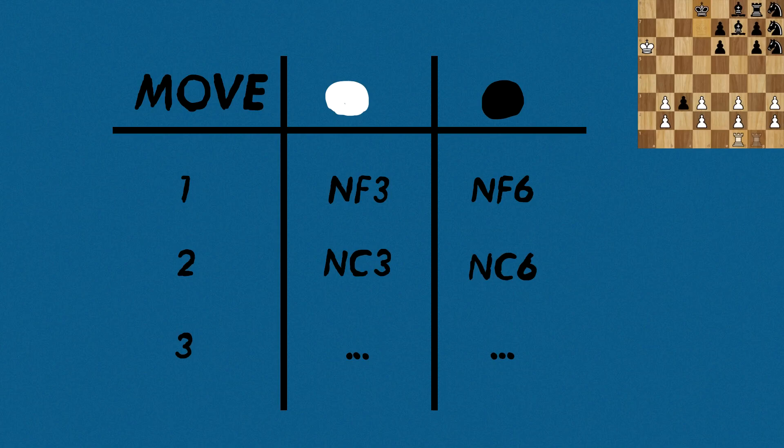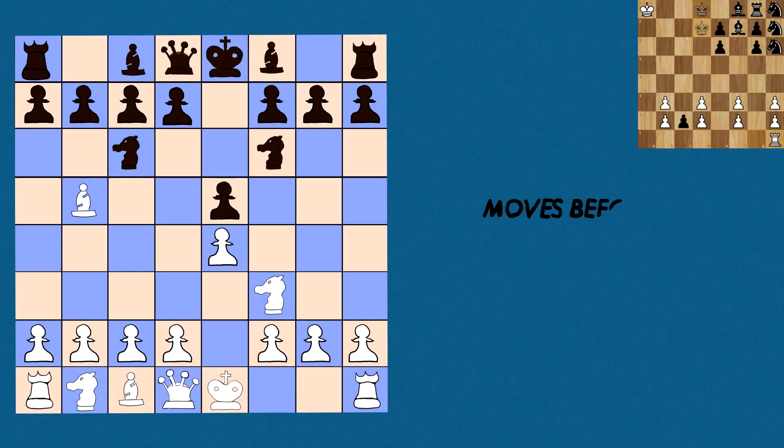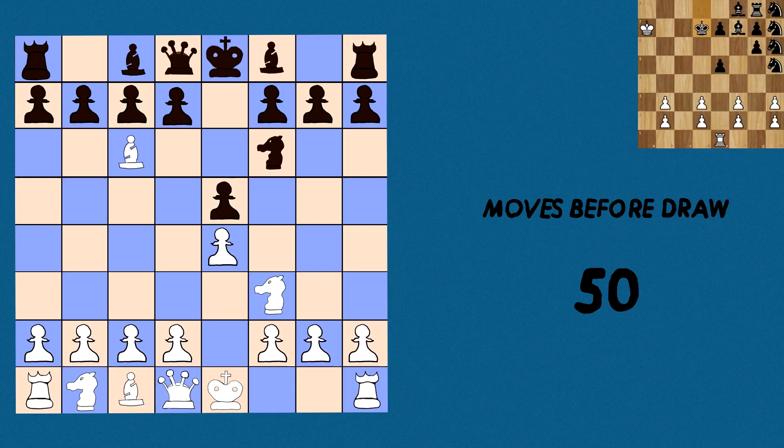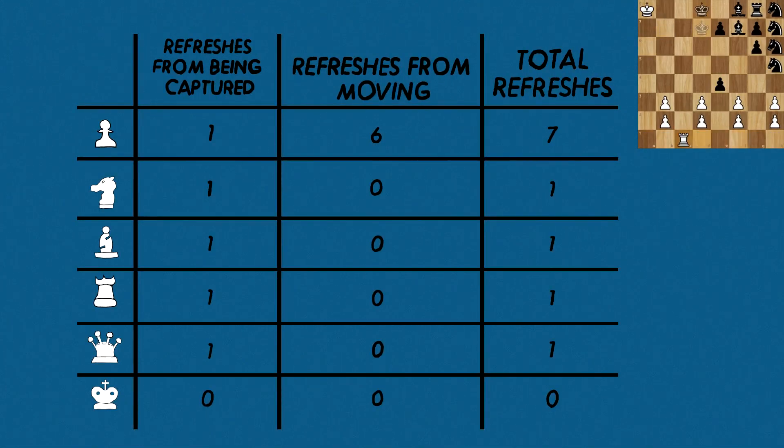Now, we must talk about the value of the pieces. Since we have the 50 move rule, we need to calculate the amount of resets we have. Resets meaning getting to the 50 move limit, and then making a capture or moving a pawn to reset the 50 move counter to prevent a forced draw. Because the pawn move resets the 50 move count, pawns are much more valuable than other pieces.